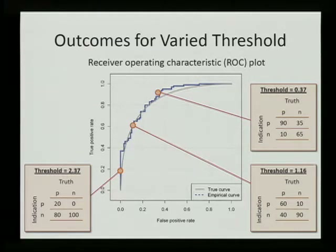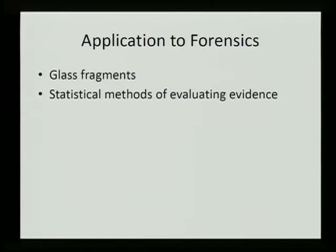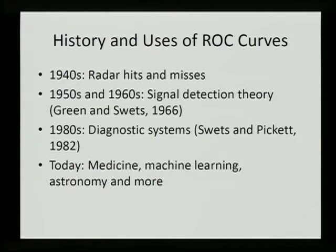You don't actually have to go through the laborious process of calculating these tables for every point on an ROC curve. Instead, the ROC curve depends only on the order of the similarity scores from the positives and negatives. The specific application we considered was assessing the performance of different statistical methods of evaluating evidence in the form of glass fragments. ROC curves first appeared in the 1940s for reading radar, spread to signal detection theory in the 1950s and 1960s, and were popularized in medicine through a seminal book by Green and Swets and a 1982 paper by Swets and Pickett. Today they are used in many fields including machine learning and astronomy.